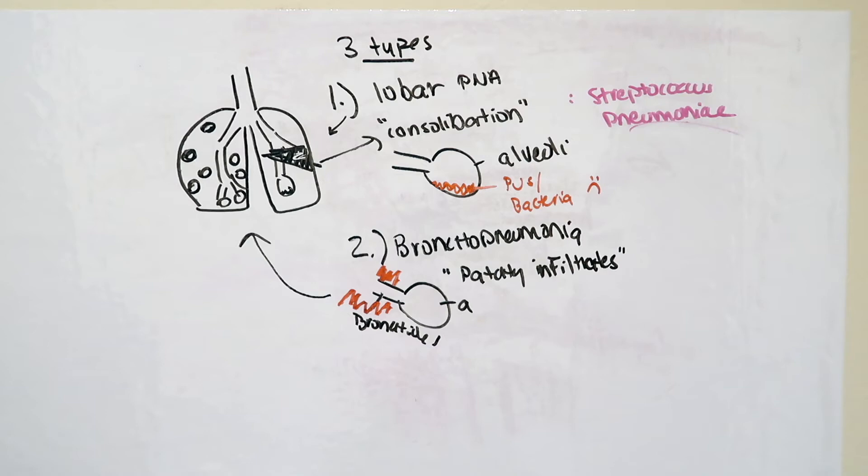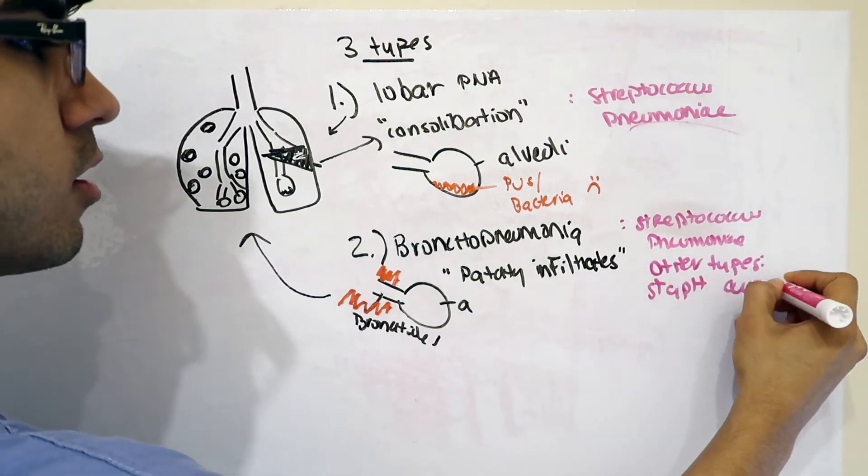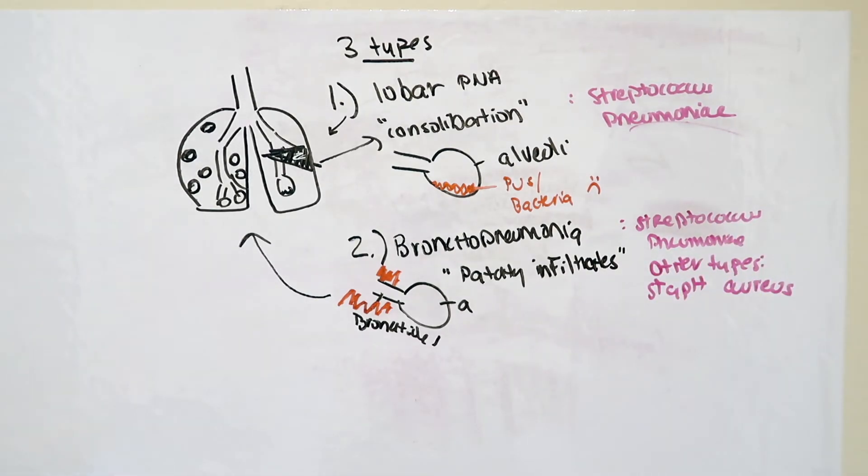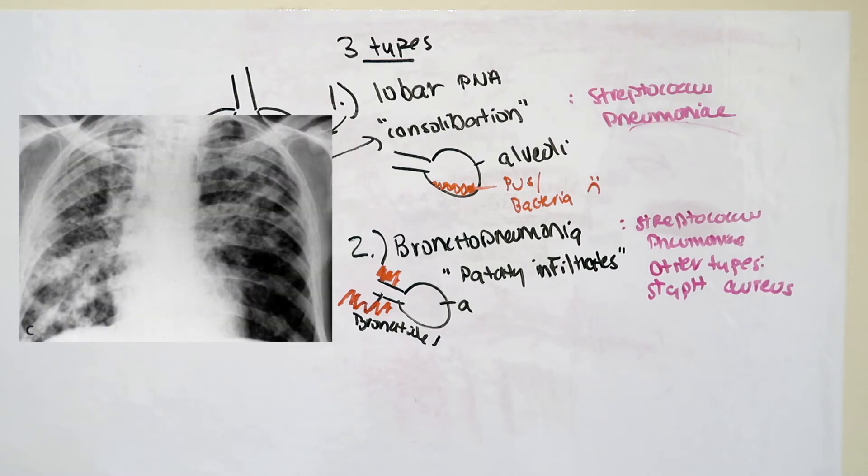Now, again, some of the culprit pathogens include our friend streptococcus pneumonia, but also include other types such as Staph aureus, which is another bacteria that can cause this type of infection. Here is a chest x-ray demonstrating more of this patchy appearance, which can occur in part of or diffusely through all of the lungs.